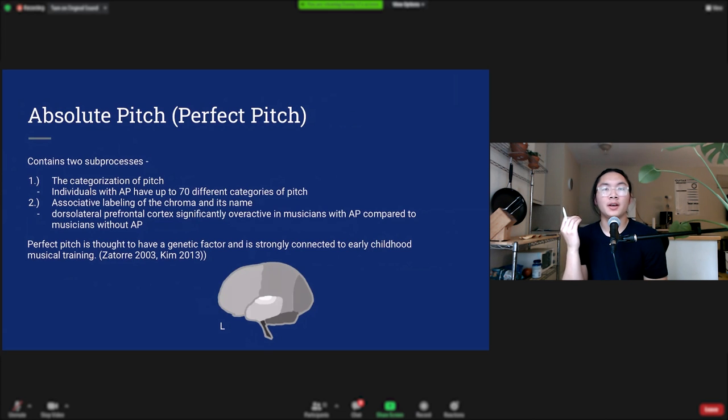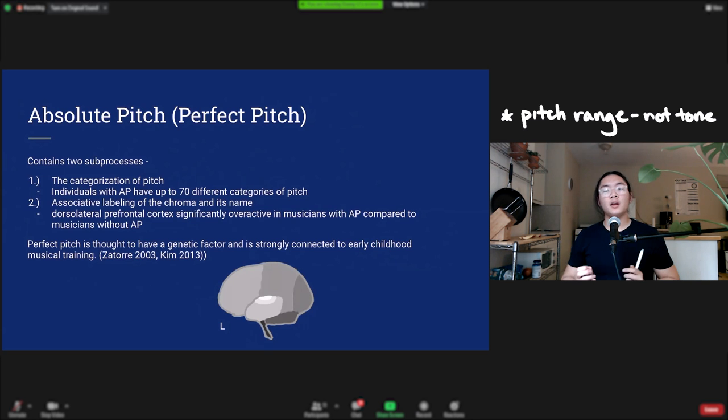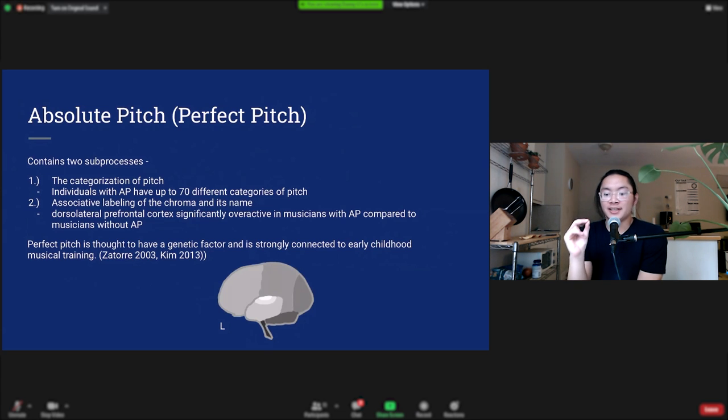Absolute pitch is when someone can hear a note and instantly name it without any external reference. It contains two sub-processes: the first is the ability to categorize that pitch, and the second is the ability to associate that pitch with the name of the pitch. The first sub-process, categorization, is different in people with absolute pitch and people without it. A normal person, like you or me, can differentiate six to seven different categories of pitch - you can tell the tone of a trombone from the tone of a trumpet. However, people with absolute pitch can have up to 70 different categories of pitch, meaning that they can differentiate very slight differences in pitch.